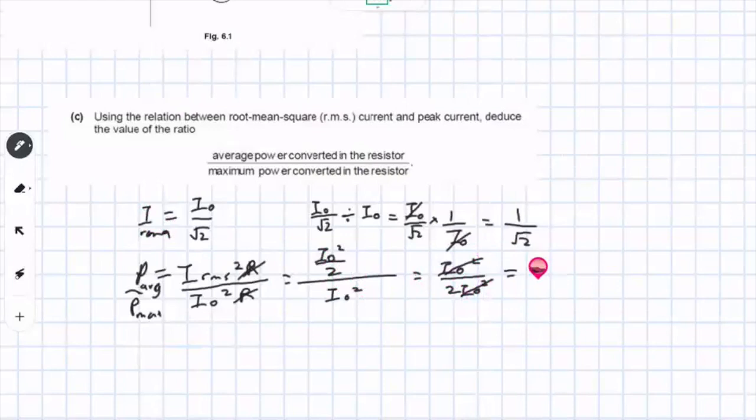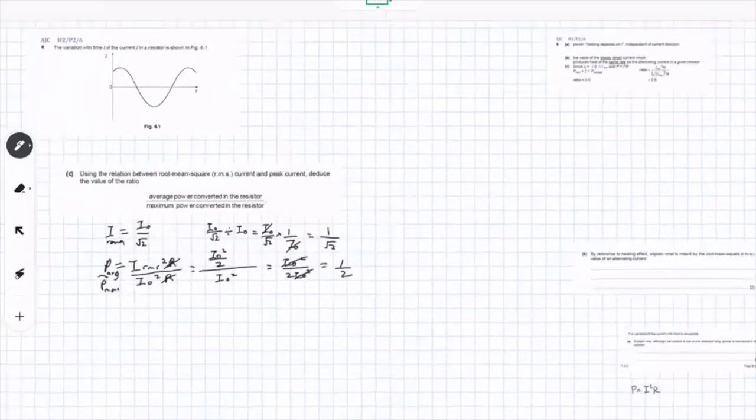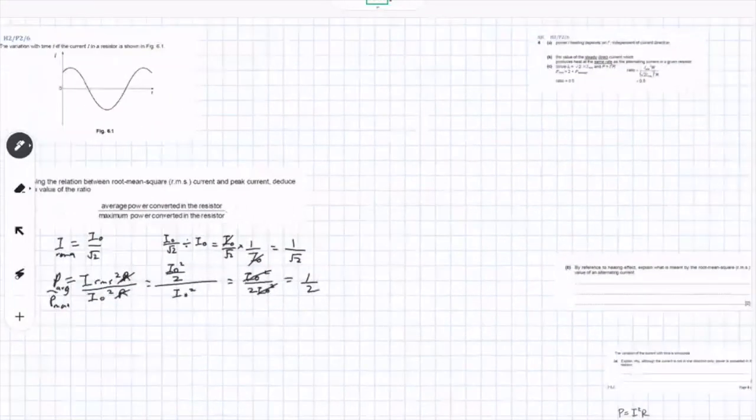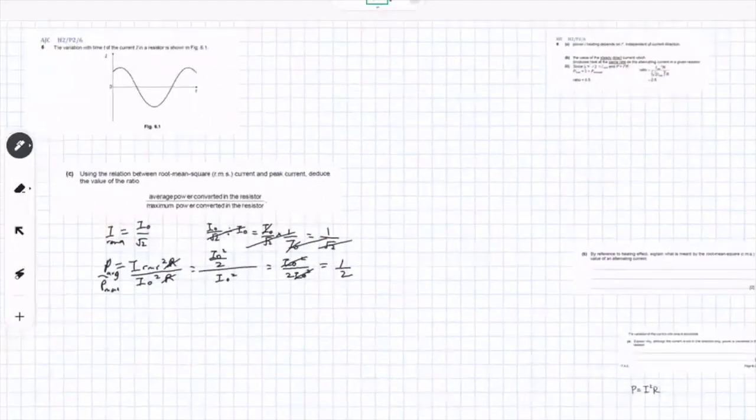1 over 2? Yeah. 1 over 2. Yeah. Correct. See? The answer is 0.5. Yeah? Yeah.